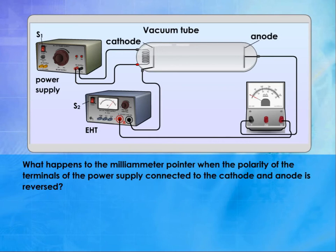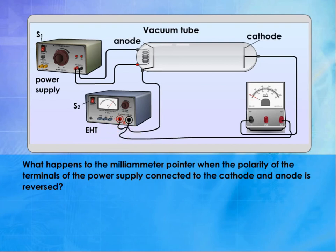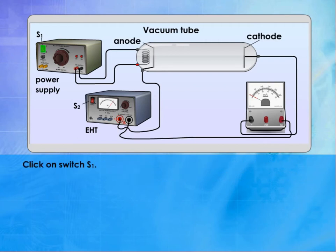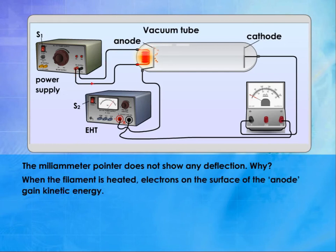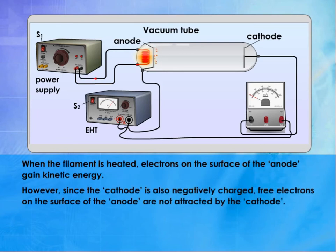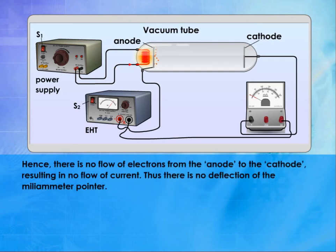What happens to the milliammeter pointer when the polarity of the terminals of the power supply connected to the cathode and anode is reversed? Click on S1, then S2. The milliammeter pointer does not show any deflection. When the filament is heated, electrons on the surface of the anode gain kinetic energy. However, since the cathode is also negatively charged, free electrons on the surface of the anode are not attracted by the cathode. Hence, there is no flow of electrons from the anode to the cathode, resulting in no current flow and no deflection of the milliammeter pointer.